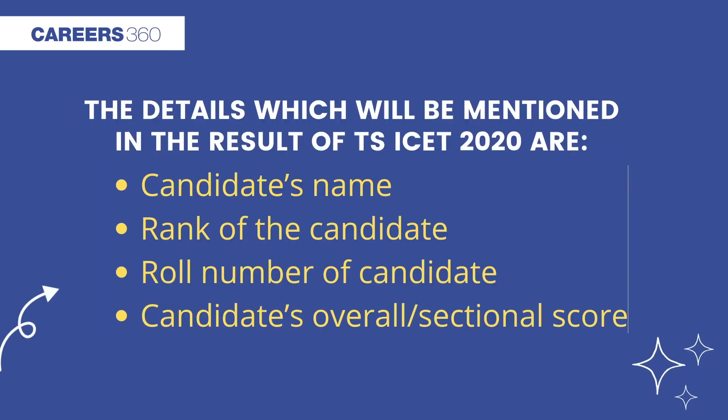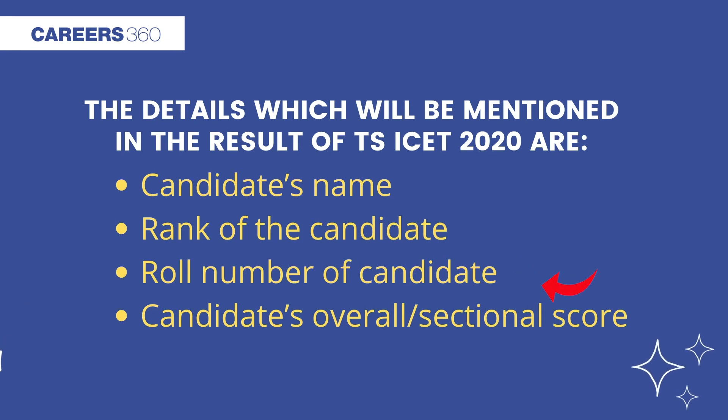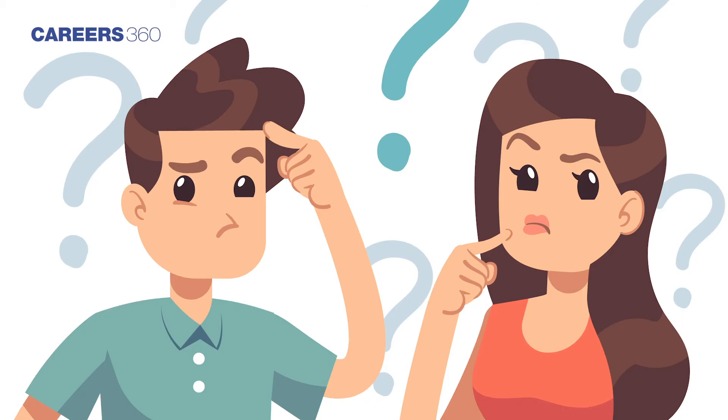The TSICET 2020 rank card will include the candidate's name, rank of the candidate, roll number of the candidate, and the candidate's overall as well as sectional score.